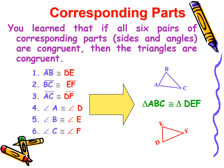When talking about corresponding parts, they are the parts of triangles that are in relative position. So if we have triangle ABC and triangle DEF, AB corresponds to DE, BC corresponds to EF, and AC corresponds to DF — wherein AB is also congruent to DE, BC is also congruent to EF, and AC is also congruent to DF. When it comes to angles, angle A corresponds to angle D, angle B corresponds to angle E, and angle C corresponds to angle F. Angle A is also congruent to angle D, angle B is congruent to angle E, and angle C is congruent to angle F.